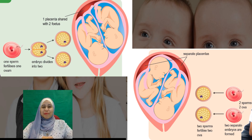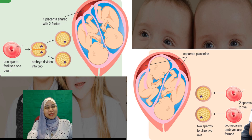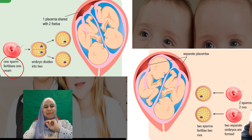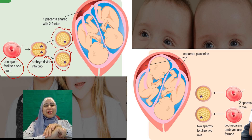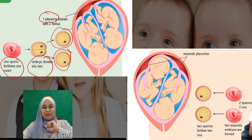Now we look at the formation of identical and fraternal twins. In the identical twin, one sperm fertilizes one ovum, forming one embryo. But the embryo will later divide into two. In identical twins, there is only one placenta shared by the two fetuses, but each fetus has its own umbilical cord.